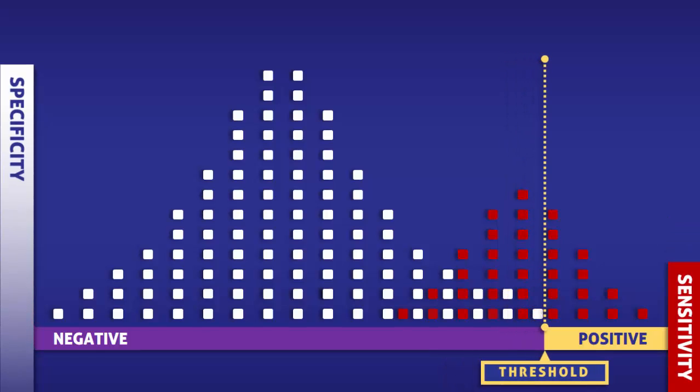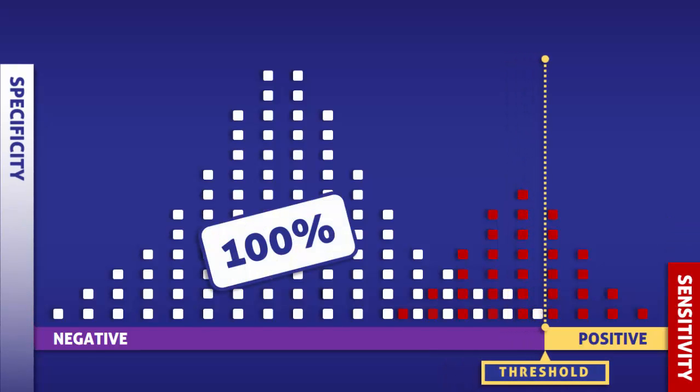If we shift the threshold to the right, we can obtain 100% specificity. So with this test, the condition will only be detected in people who have it. Because of the high specificity, this test could be used as a confirmatory test.